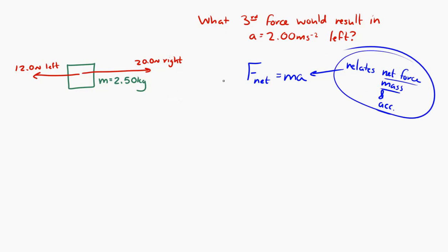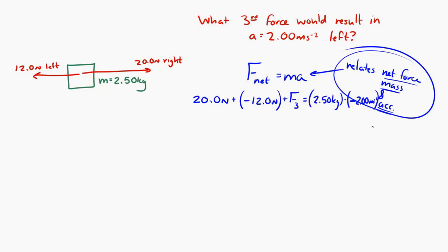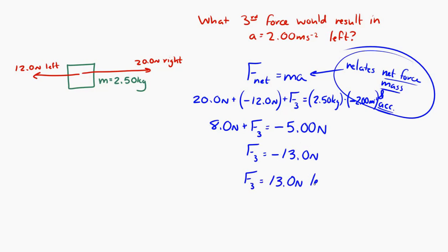The net force equals M times A. I have 20 Newtons to the right, 12 Newtons to the left, and an unknown third force. Together they must equal 2.50 kilograms times negative 2 meters per second squared, since the acceleration is 2 meters per second squared to the left. Doing a little algebra, the missing force has to be negative 13 Newtons — that negative sign means to the left — so my missing third force is 13 Newtons to the left.